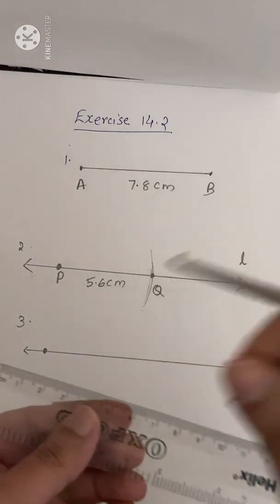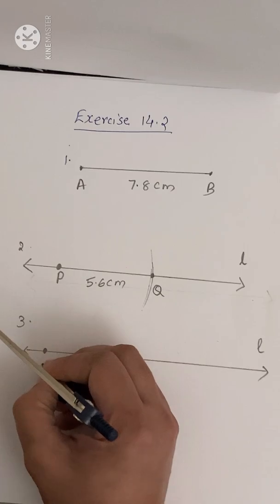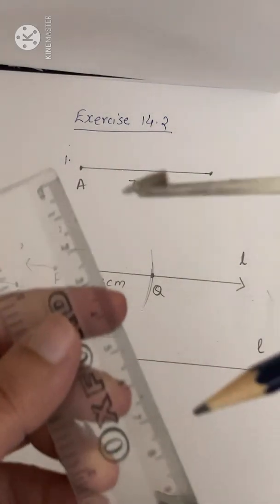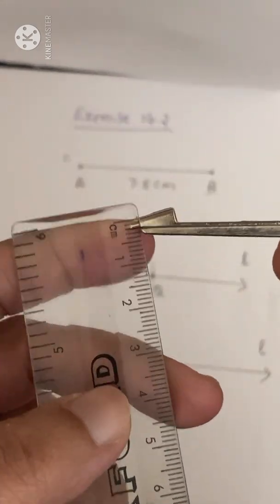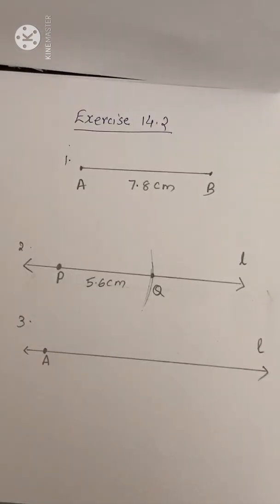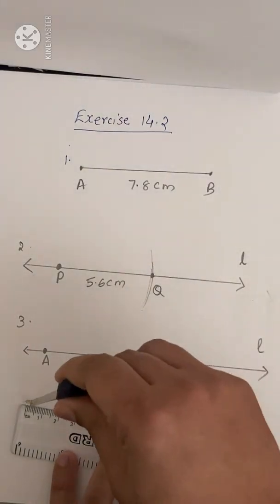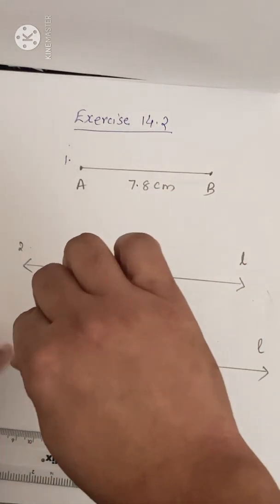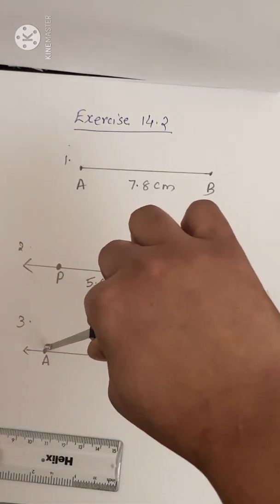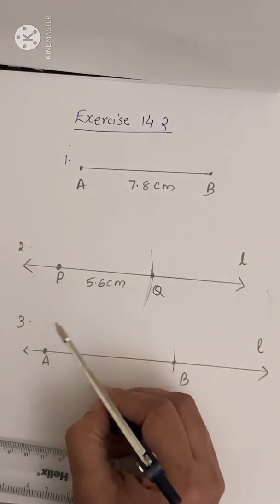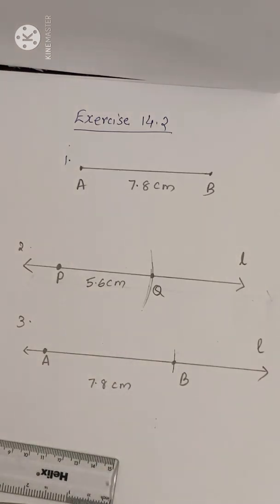Then mark a point and take your ruler and compass. The first point let it be A, because we are going to construct line segment AB first. The length of AB is 7.8 cm, so first take 7.8 cm — open your compass with the pointer on 0 and pencil on 7.8. Then place the compass pointer on A and swing an arc. This is B, and the length is 7.8 cm.